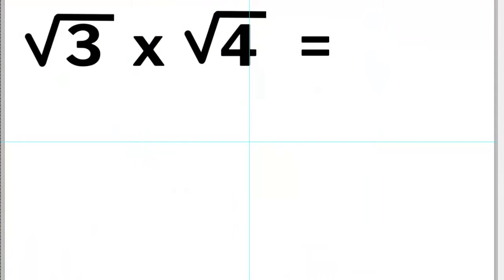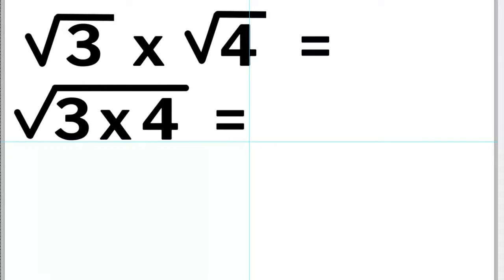To multiply square roots is fairly simple. For example, multiply the square root of 3 with the square root of 4. Make a new square root symbol and place 3 times 4 inside that new square root symbol. 3 times 4 equals 12, so the answer is the square root of 12.